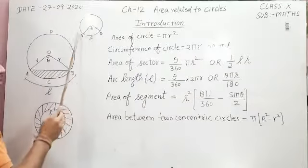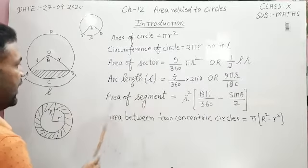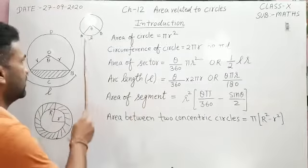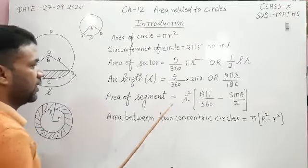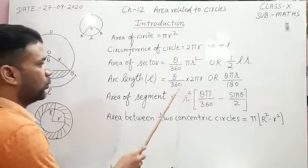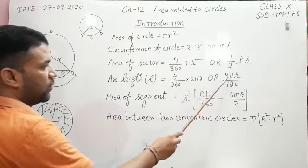Now arc length l equals θ/360 × 2πr. If we cancel this 2 by this 360 to 180, then we can write the formula θπr/180.